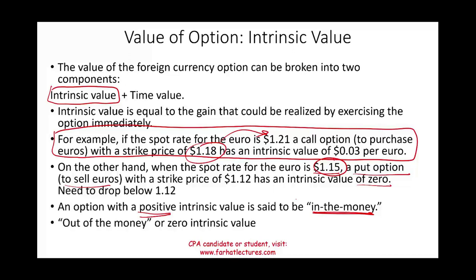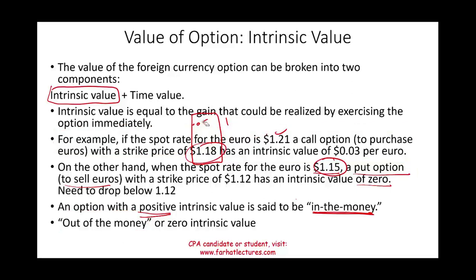So an option can be in the money (positive intrinsic value), out of the money (exercising results in a loss), or at the money (zero intrinsic value — no gain, no loss). A put option with a strike price of $1.12 becomes valuable when the euro falls below $1.12. If the spot rate drops to $1.05, you can sell at $1.12 using the put option — you are in the money.